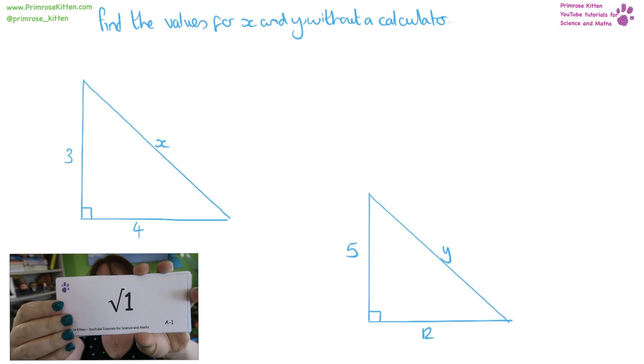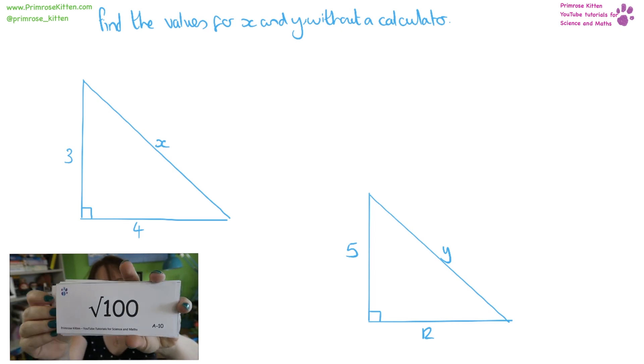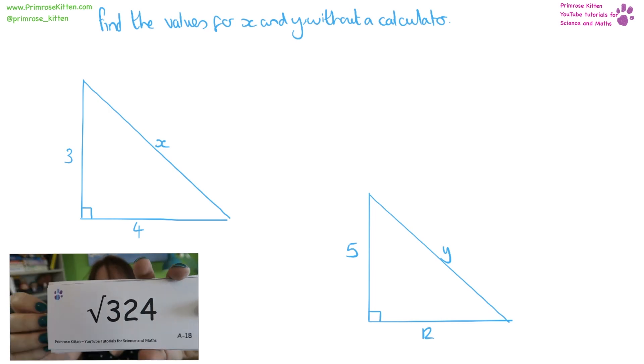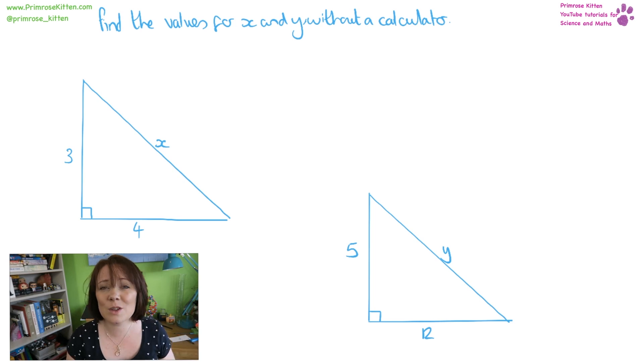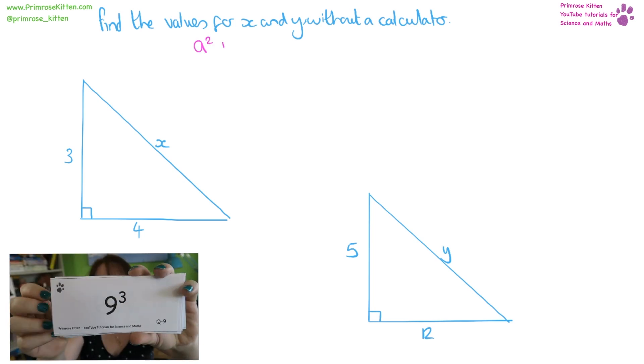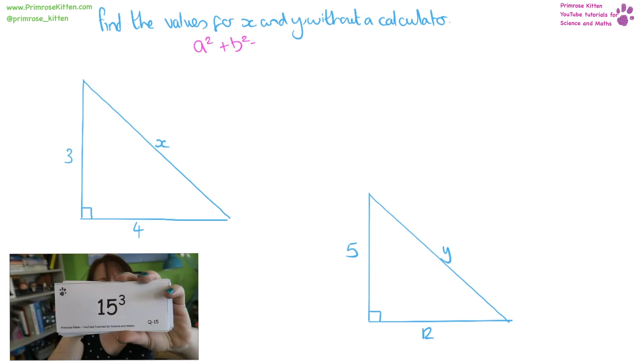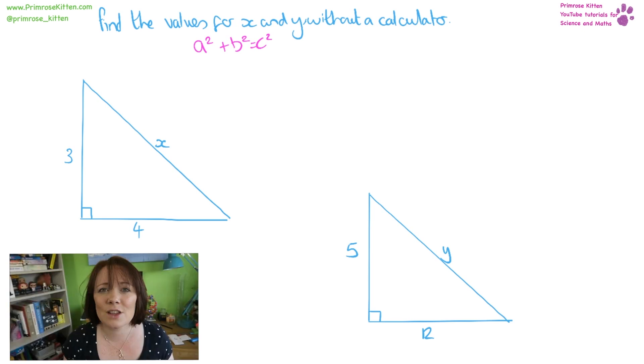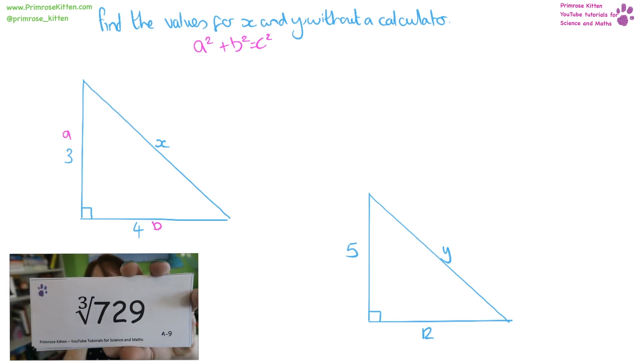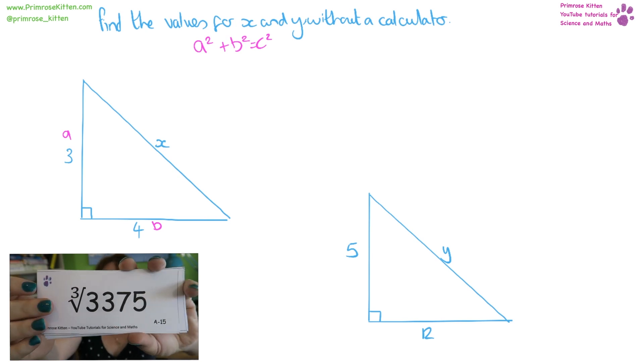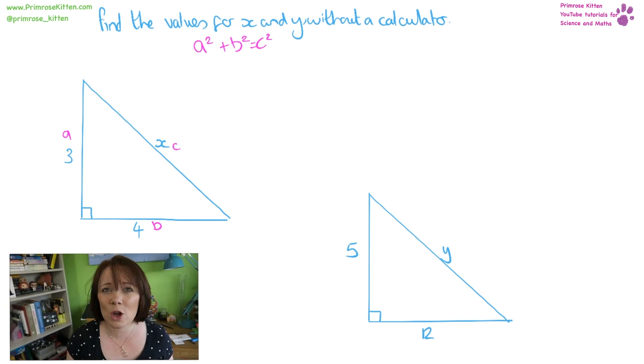Here we need to find the values of x and y which are the hypotenuse of right angle triangles. So for this we need to use Pythagoras which is a squared plus b squared equals c squared. a and b being the sides either side of the right angle, c being the hypotenuse.